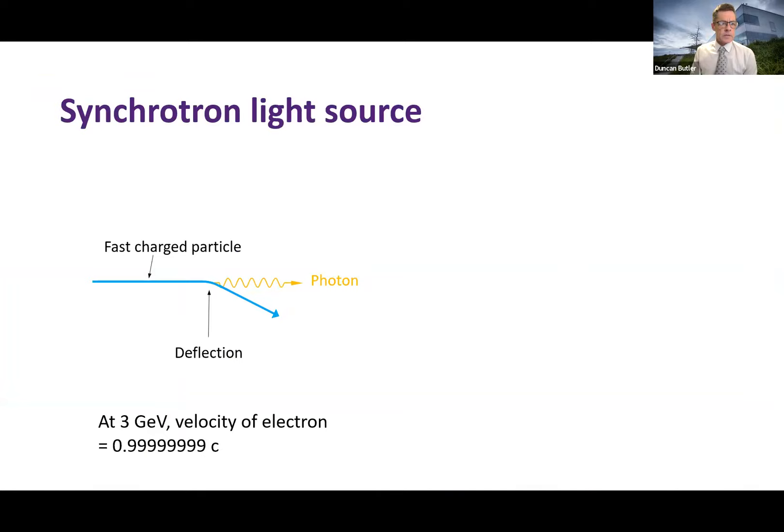So how do synchrotrons produce radiation? To understand that, we just need to know a simple fact of physics that any charged particle, when it's accelerated, radiates electromagnetic energy. Synchrotrons use very fast charged particles. And here I'm imagining an electron. Most synchrotrons use electrons. So if that's traveling close to the speed of light and it changes direction, it will radiate a photon. And if it's going close to the speed of light, it's forward directed.